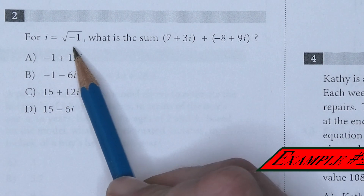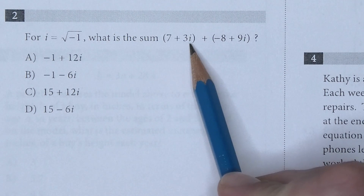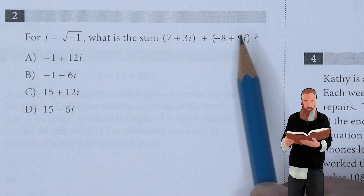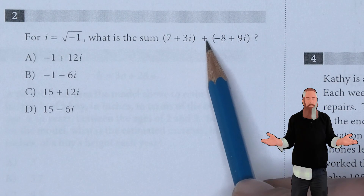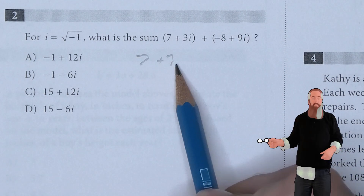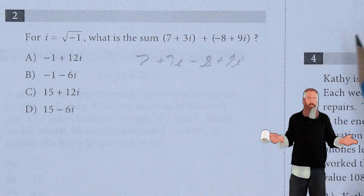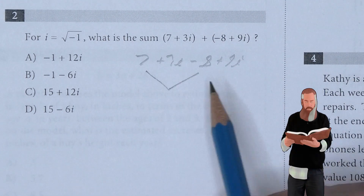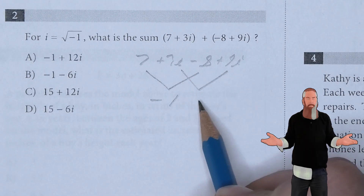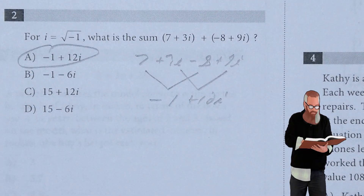For i equal to the square root of negative one, what is the sum of seven plus three i plus negative eight plus nine i? The first thing we want to do is get rid of the parentheses by distributing that plus sign, which gives us seven plus three i minus eight plus nine i. Combining like terms: seven minus eight is negative one, and three plus nine is twelve i. So A is the answer.